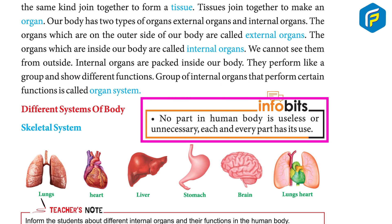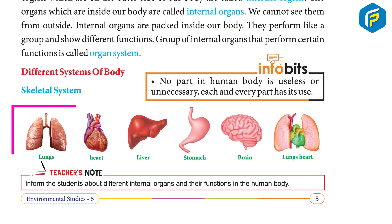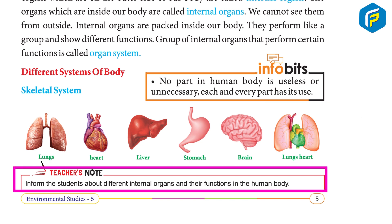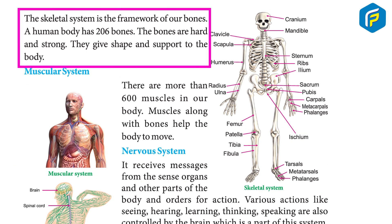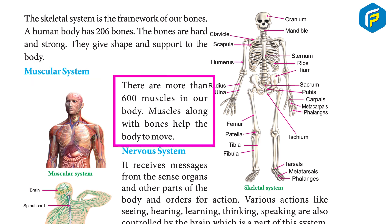In the human body, no part is useless or unnecessary — each and every part has its use. The skeletal system is the framework of our bones. A human body has 206 bones. The bones are hard and strong; they give shape and support to the body. The muscular system has more than 600 muscles in our body.